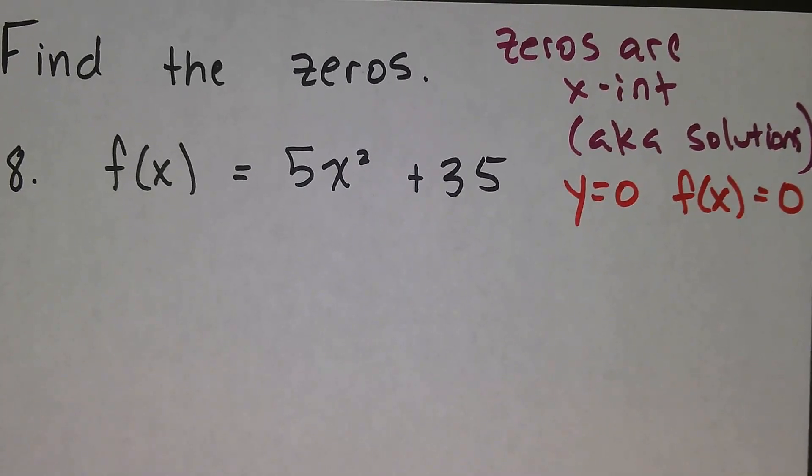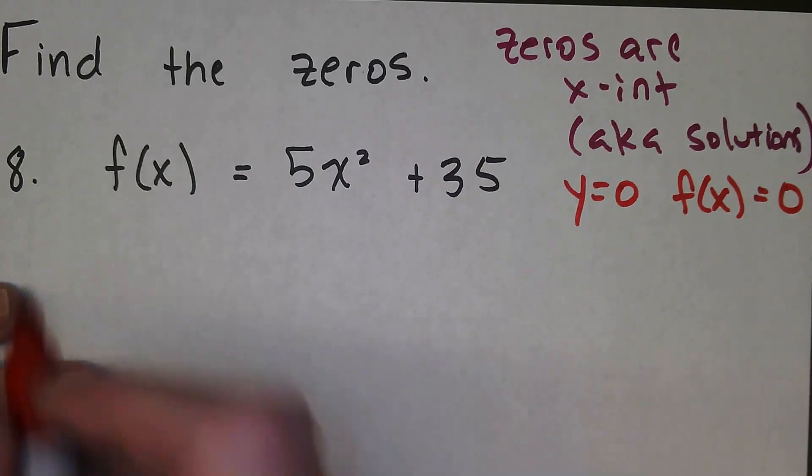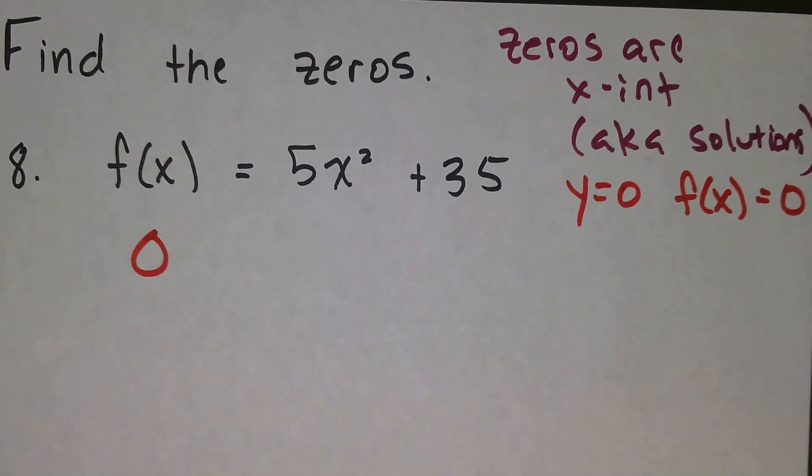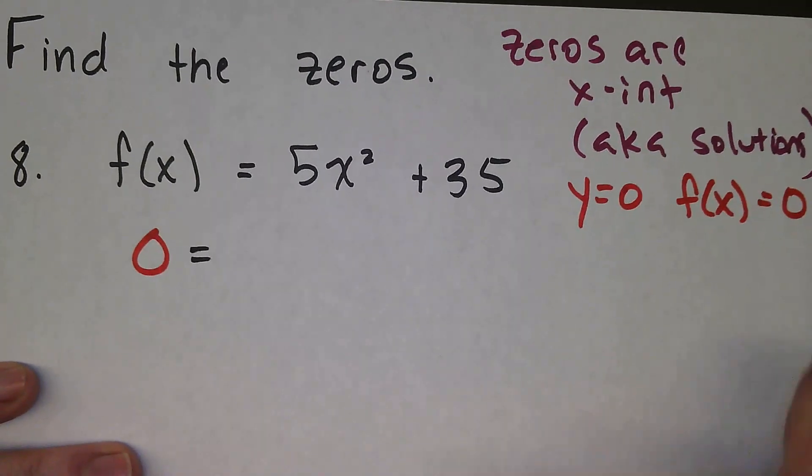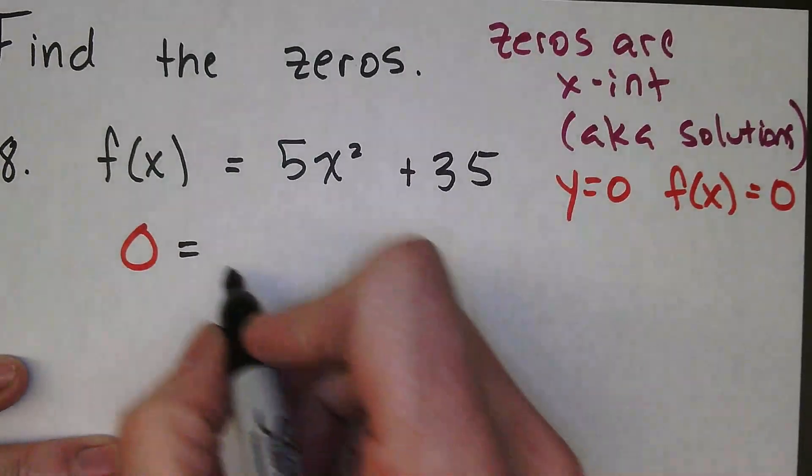To find the zeros, the very first thing we're going to do is replace the f(x) with zero. That allows us to find the x-intercepts where the y-value, the f(x) value, is zero.